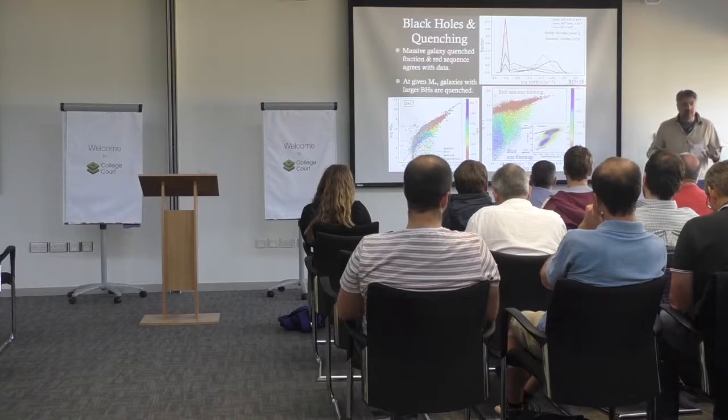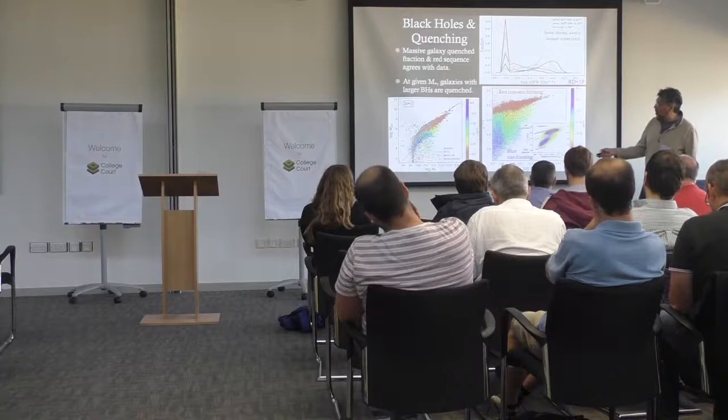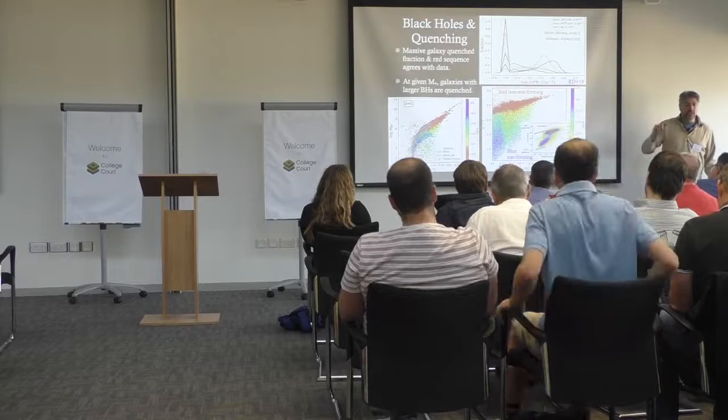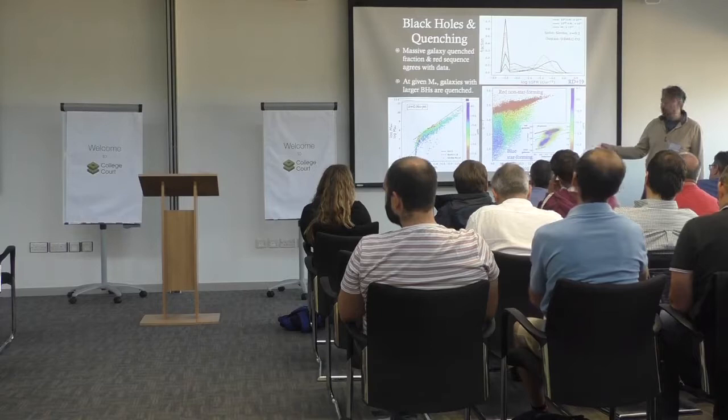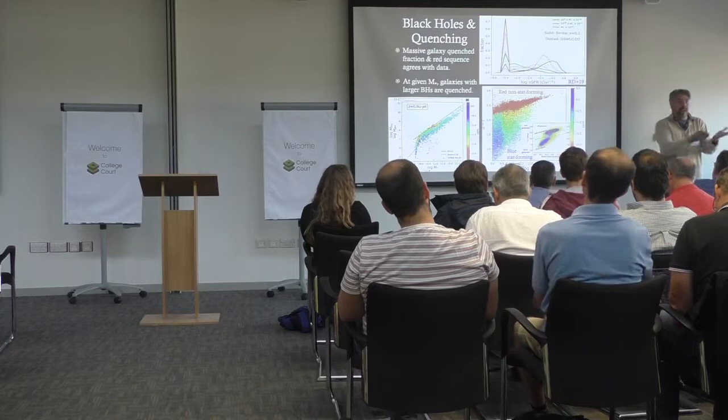Looking at black hole properties versus stellar mass, things with large black holes tend to be red — meaning they're not star-forming. This is an example of a numerical experiment: suppose we take our exact simulation and simply turn off the jet feedback part. What we get is that all the massive galaxies that were really red are now all blue — they're now star-forming. This very directly tells us that the black hole jet feedback is the thing creating the nice red sequence.